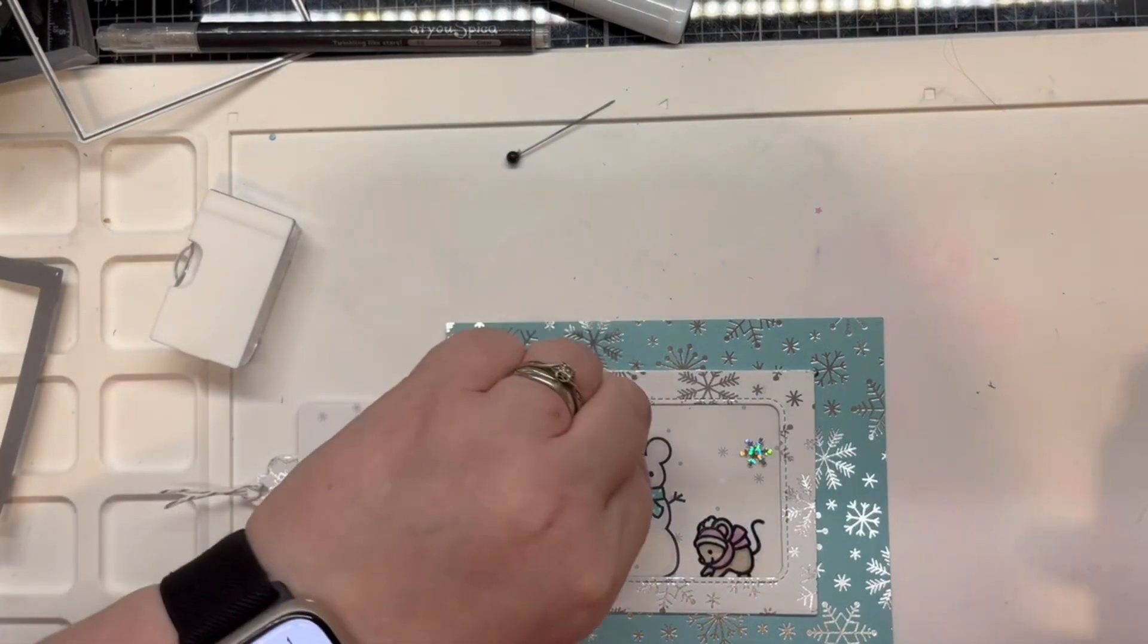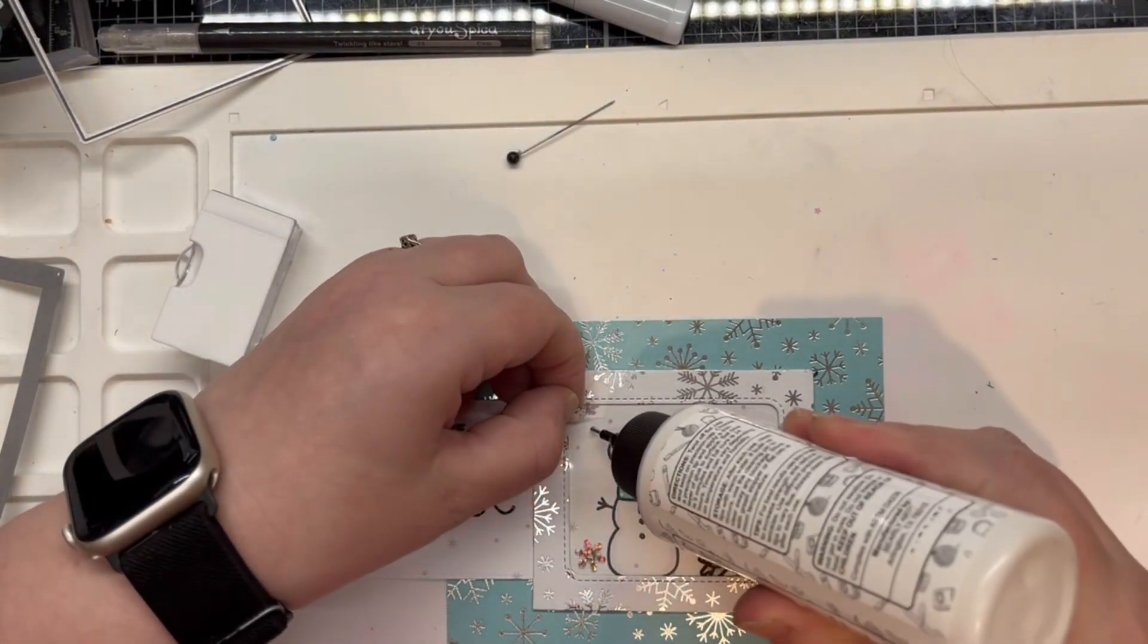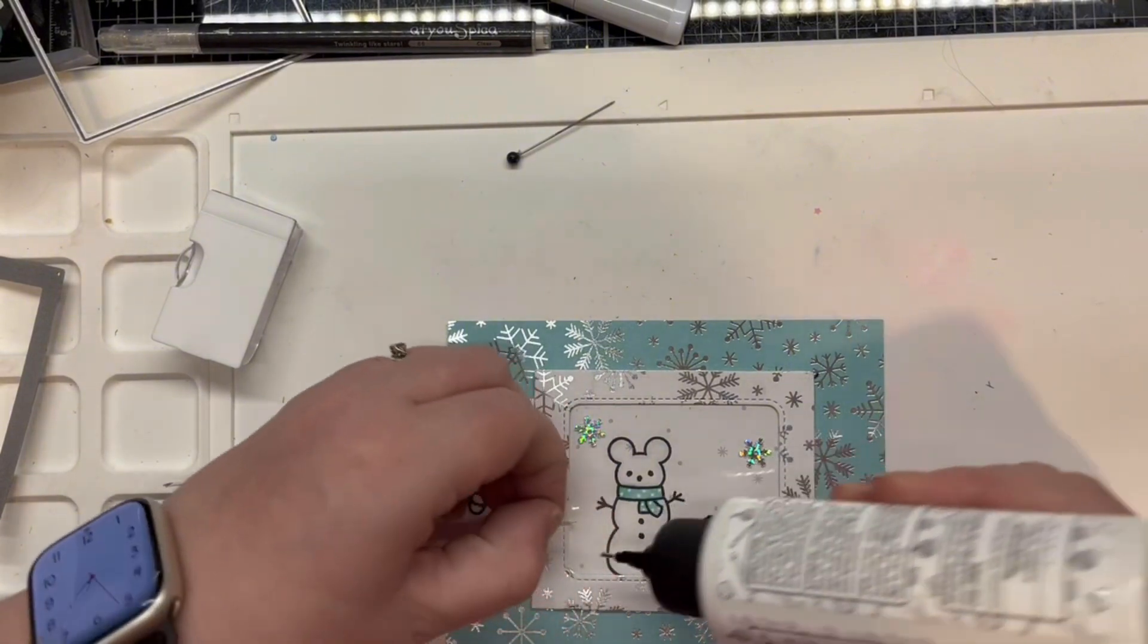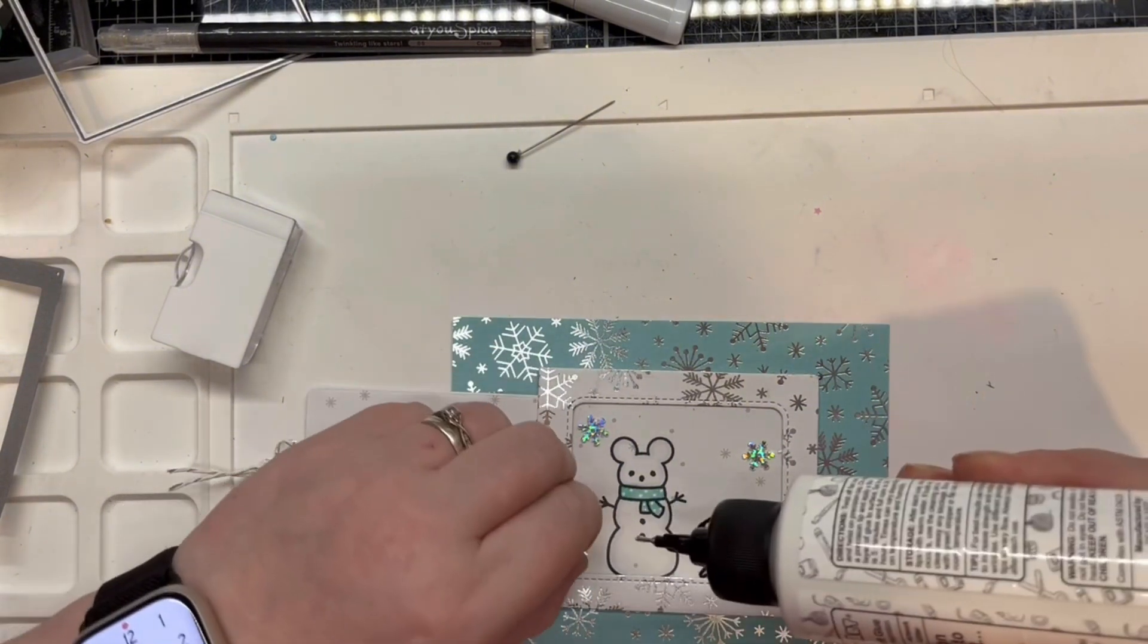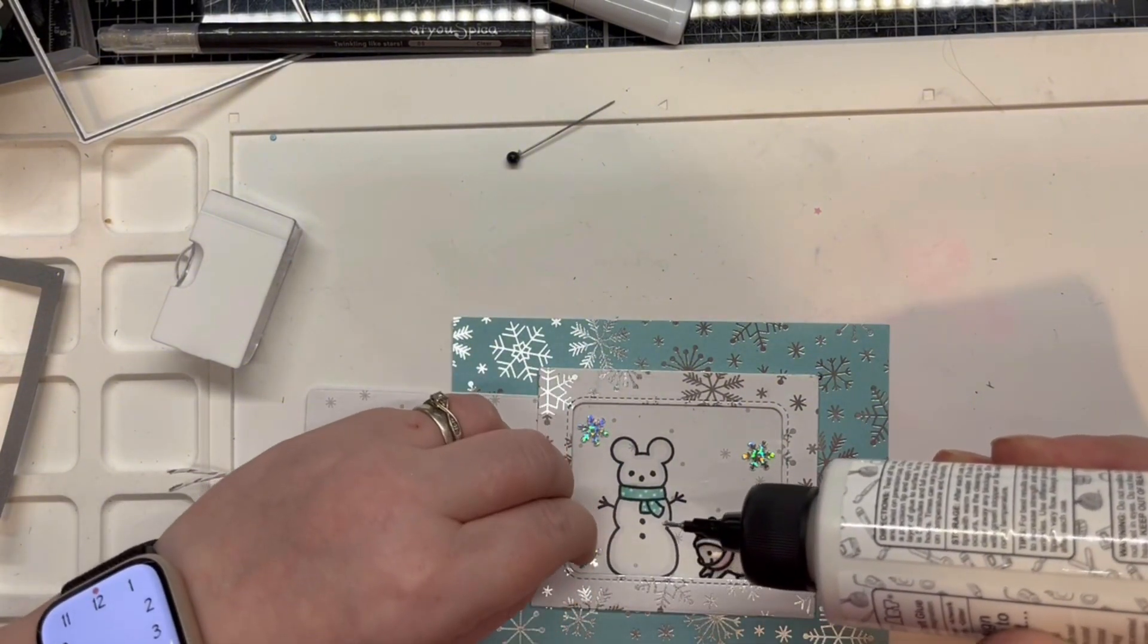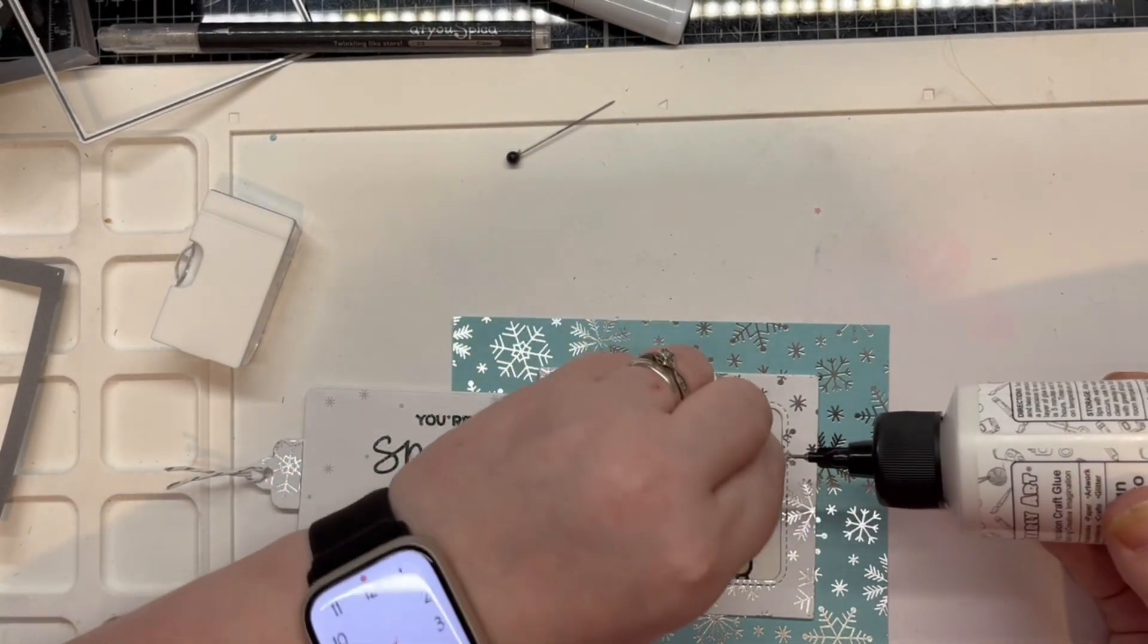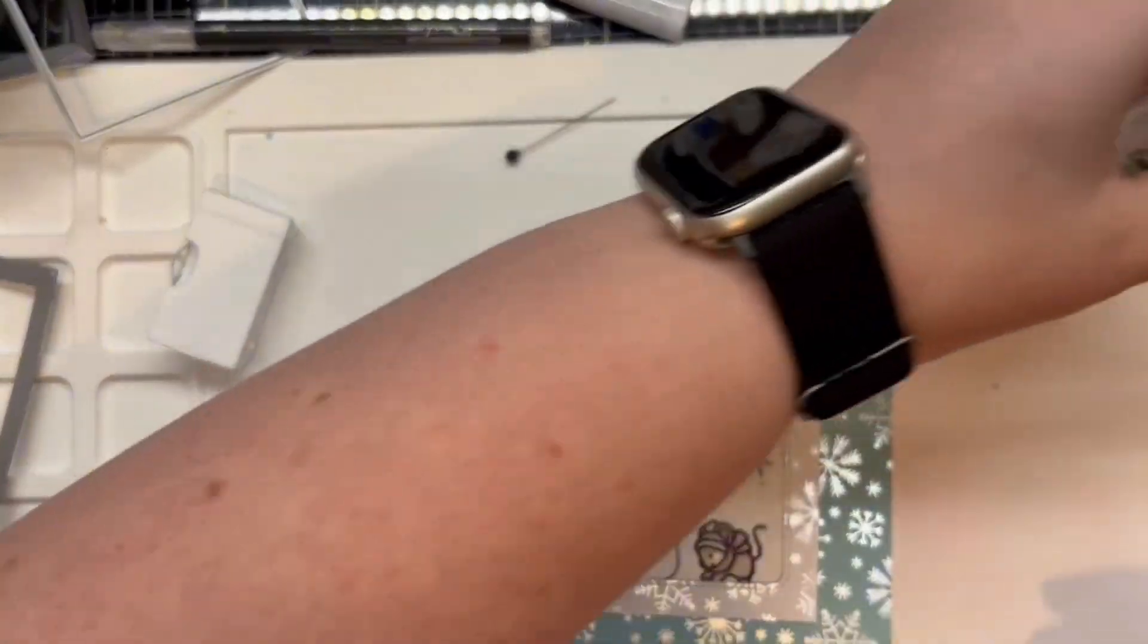Off screen I colored the images using a fresh color palette and added the magic slider to a piece of Let It Shine snowflakes in aqua cut to 4.25 inches by 5.5 inches. My final touch was to add sequins to the acetate to fill the empty space around the sentiment.